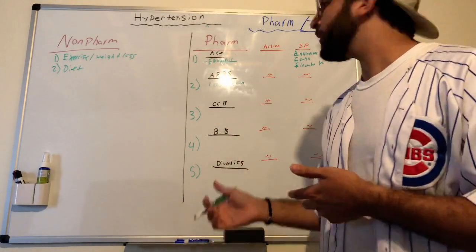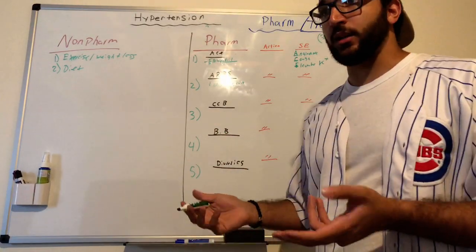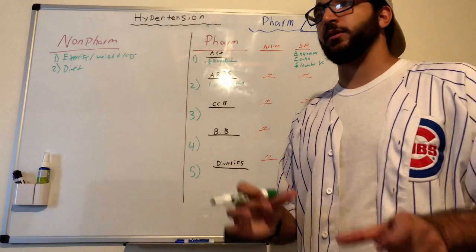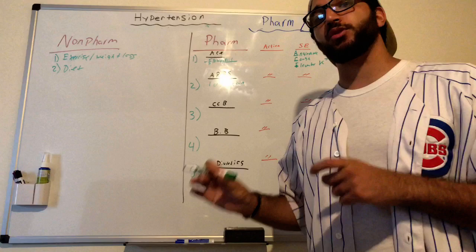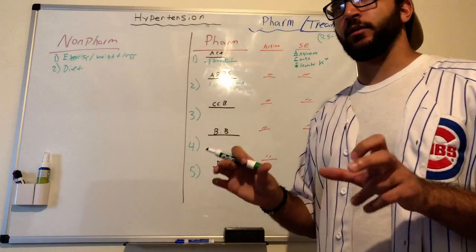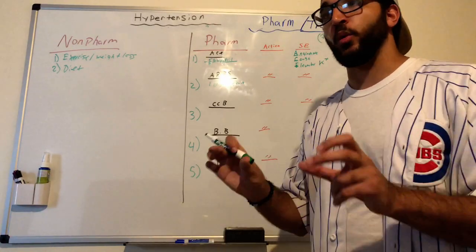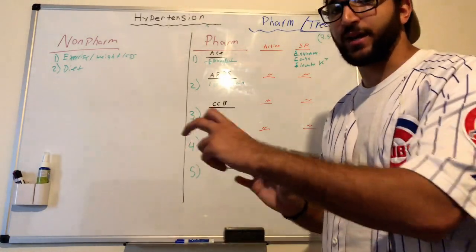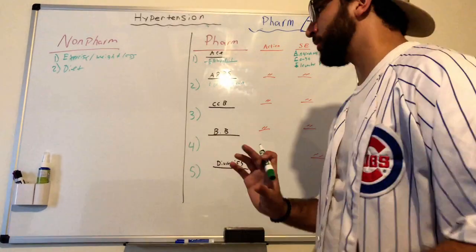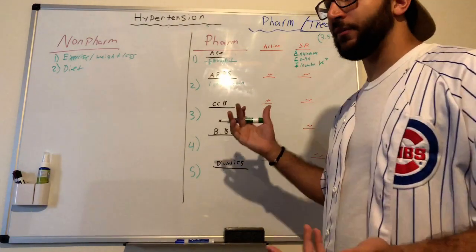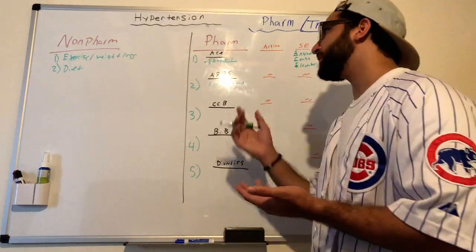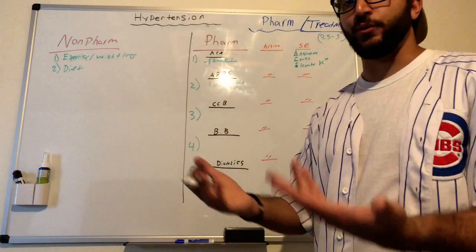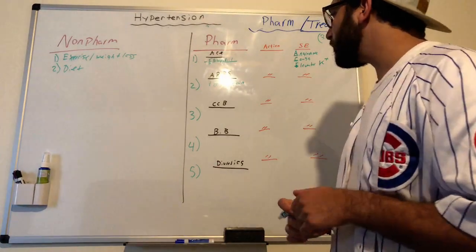ARBs — anything ending in '-sartan' like losartan — act on angiotensin II receptors. Angiotensin II is a potent vasoconstrictor, and ARBs block it at a different point in the RAAS system. Side effects are similar to ACE inhibitors except there is no cough. Patients should also avoid high-potassium foods.